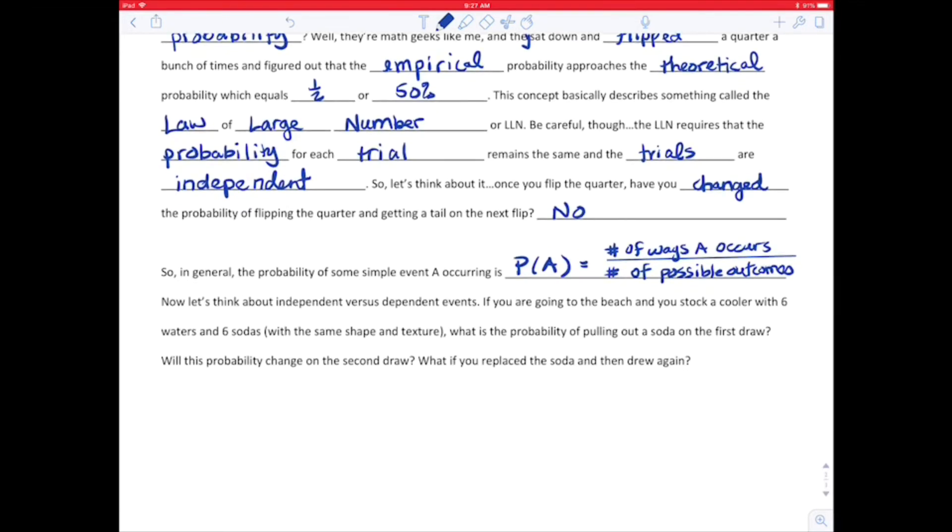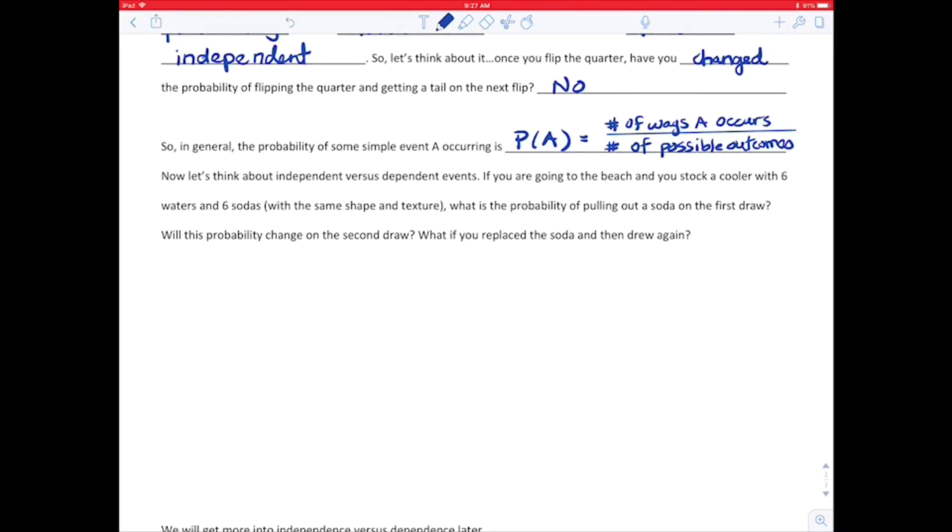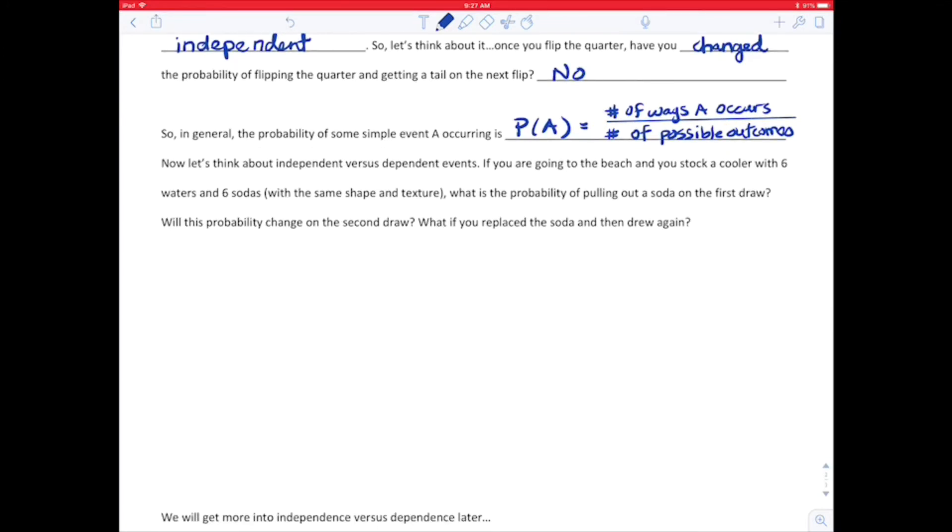Okay. So let's think about independent versus dependent events. So let's say we're going to go to the beach and we've got a cooler with six waters and six sodas. And let's just assume that they're mixed up and they're the same texture and shape. What's the probability of pulling out a soda on the first draw if you don't look? Will the probability change on the second draw? What if we replace the soda and drew again? Well, let's think about this. What if we reach into the cooler, take something out, we don't care what we get, we drink it, and then we grab something else. So that would be sampling without replacement, wouldn't it?